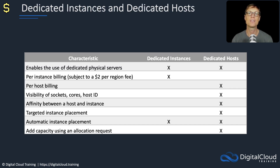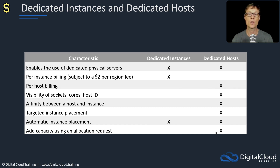Let's look at dedicated instances and hosts in more detail. With dedicated instances, your instances run on hardware that other AWS customers aren't using, but other non-dedicated instances in your own account can share that hardware. Dedicated instances use per-instance billing; dedicated hosts use per-host billing. Dedicated hosts provide additional features not available with dedicated instances: visibility of sockets, cores, and host ID; affinity between a host and an instance; targeted instance placement; and the ability to add capacity using an allocation request.